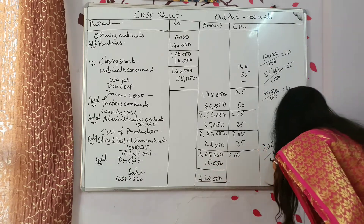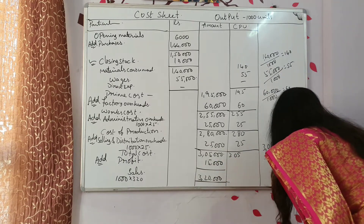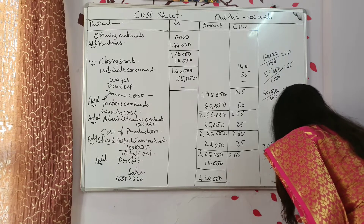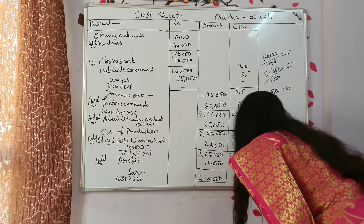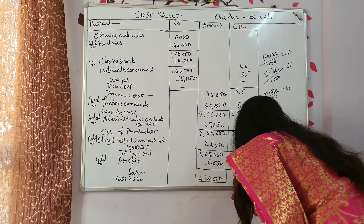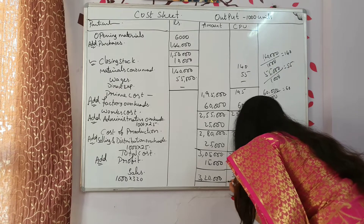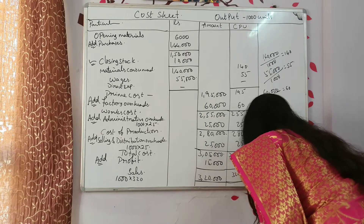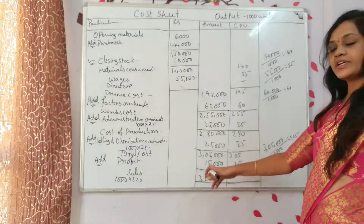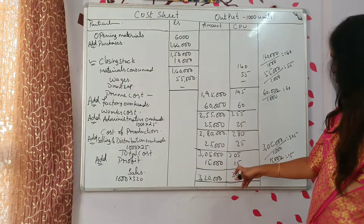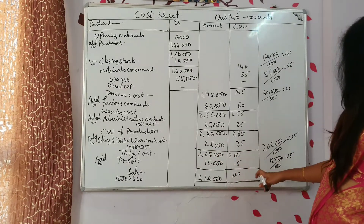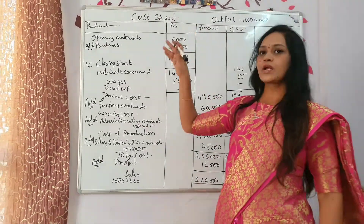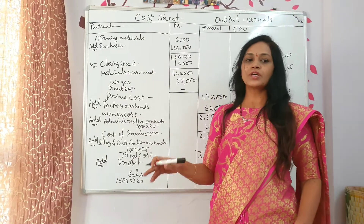Profit: 15,000 divided by 1000 — you will get 15 rupees per unit. Now the total is 320 — already given in the question, or if you want to verify: 3,20,000 divided by 1000 units you will get 320. This is the normal cost sheet.